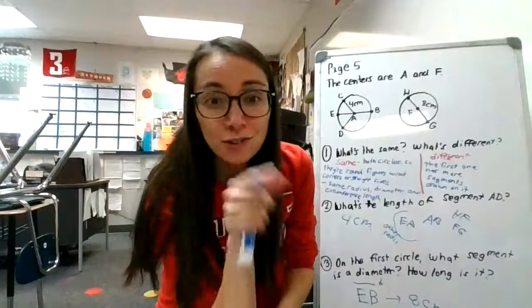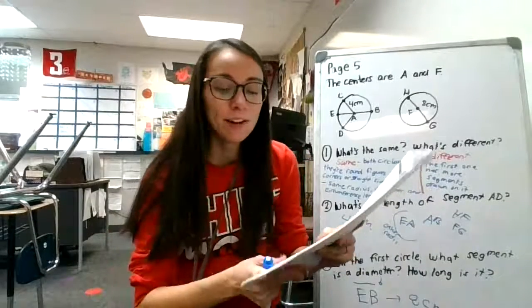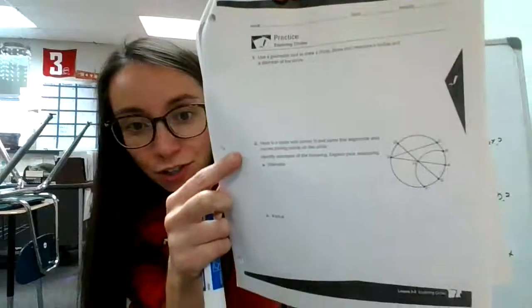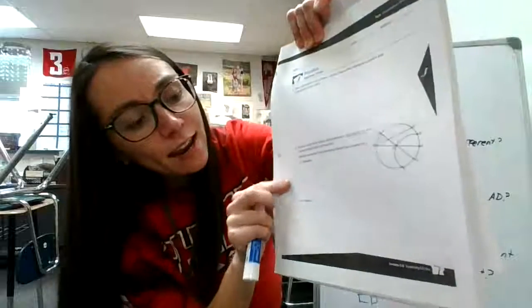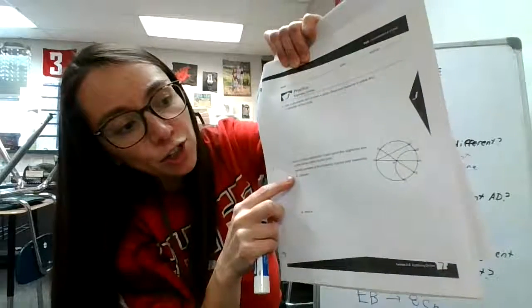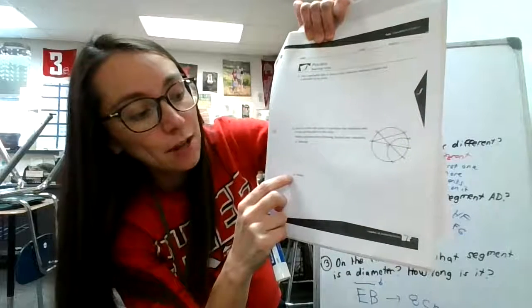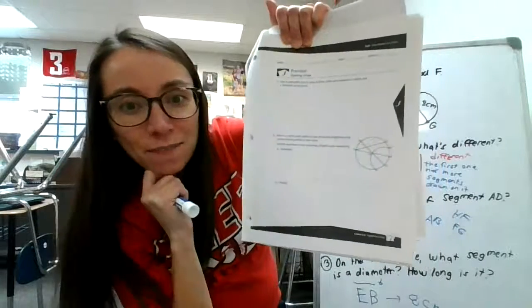Now, if you've got additional time in this group, what I want you to do is turn to page seven. On page seven, number two, I want you to do A and B. Tell me which segments represent the diameter and which segments represent the radius. And check with your team.